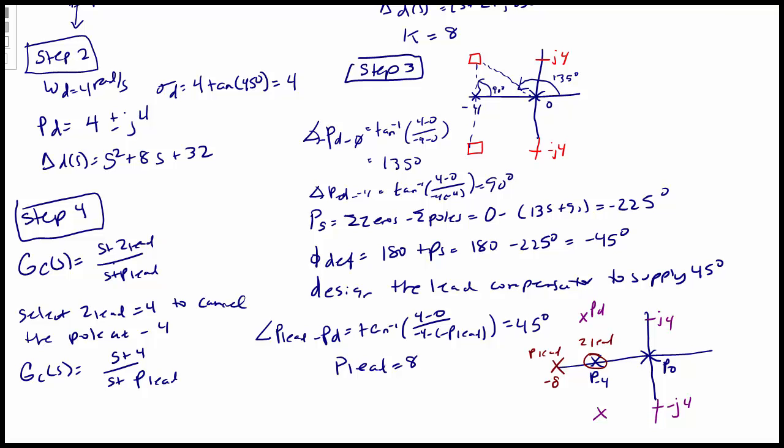And finally, I write the compensator as GC of S is equal to S plus 4 over S plus 8.